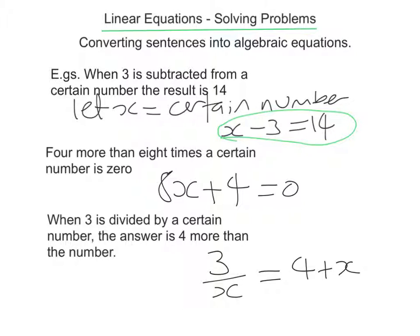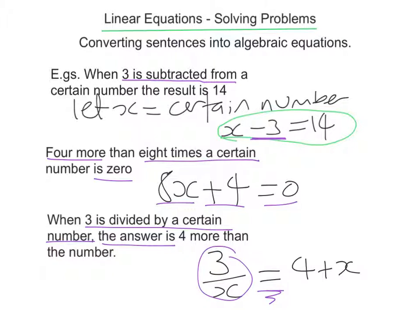With all these questions you need to read the sentence correctly and translate it into symbols. Here are a few clues: 3 is subtracted from means the 3 is going to be subtracted from the x. It will be the second number, not the first one. Students often confuse that. In the second one we've got 4 more, which is the plus 4, and 8 times a certain number, which is the 8x. In the last question, 3 is divided by a certain number becomes 3 over x. And the answer is means that's where the equals sign is. This last equation is actually not a linear equation, but it's an equation that can be solved.